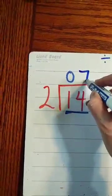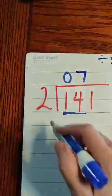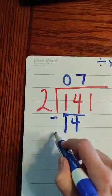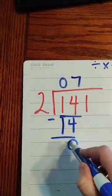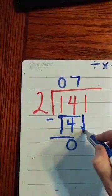It goes in 7 times, so I divide it. Now I multiply 7 times 2, 14. Now I subtract, I get 0 and I bring down because I still have a number left.